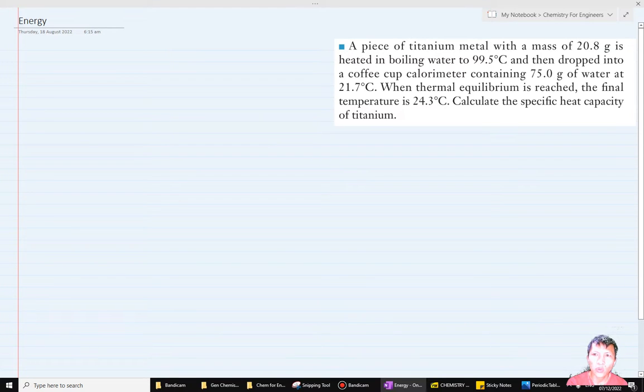The titanium is from 99.5°C, so Q of titanium would be equal to the Q of water. The Q of titanium is the mass of titanium times Cp of titanium times the temperature change. The temperature goes from 99.5°C down to 24.3°C. This is heat released, meaning heat will dissipate from it.